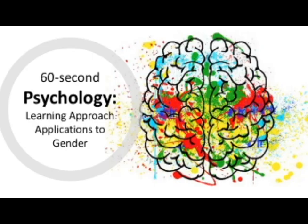The learning approach also accounts for gendered behaviour through social learning theory, which is the concept that behaviour is learned through observation and imitation. A child is more likely to observe and imitate the behaviour of a model of the same sex. Therefore, gendered behaviour is learned from the parent of the same sex. Essentially, a boy is more likely to copy their father's behaviour, and a girl is more likely to copy their mother's behaviour. They therefore learn what is considered appropriate for their own gender through this observation and imitation.